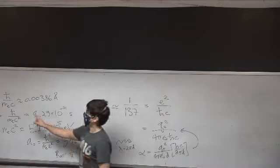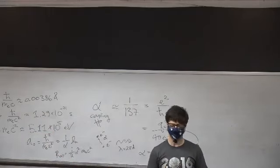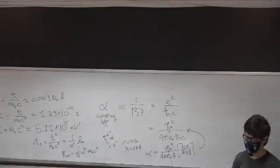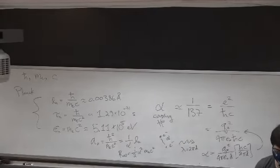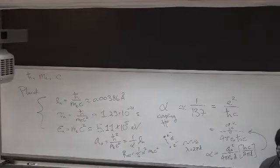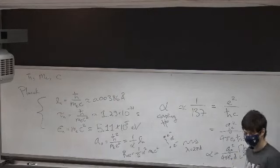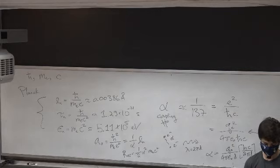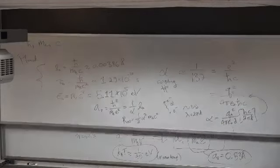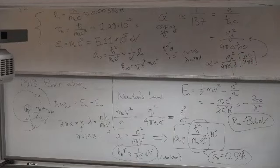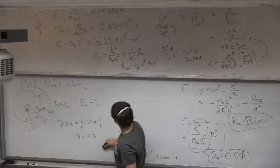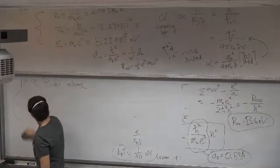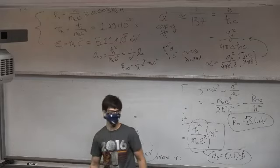Usually when people say Planck units, they refer to the ones constructed also with the gravitational constant. Any questions from online folks? Alright, so I'll take a little breather and we're going to start on the actual formalism. We won't connect back up to this physics for a while, and that's okay.